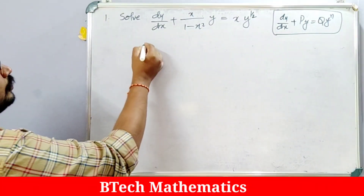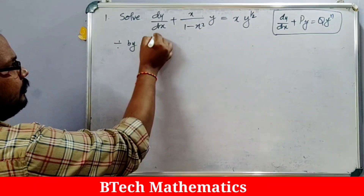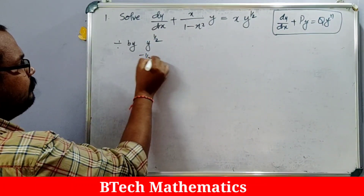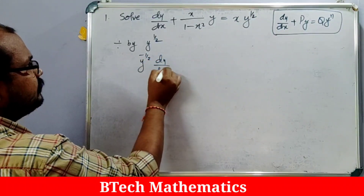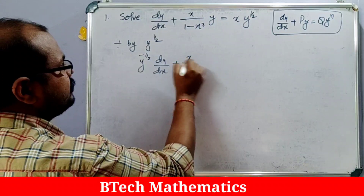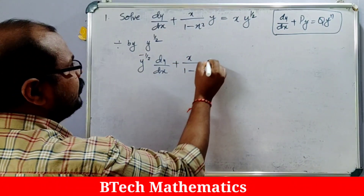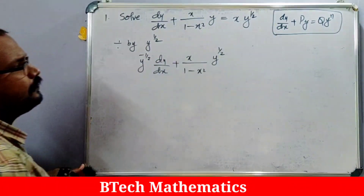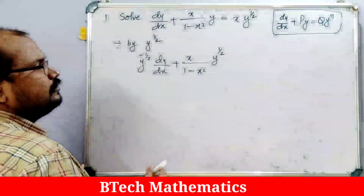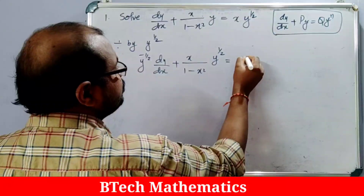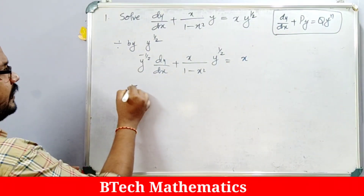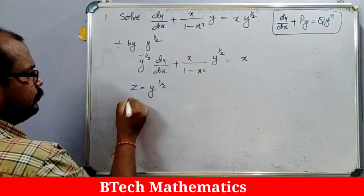Dividing by y^(1/2) gives: y^(-1/2)·(dy/dx) + x/(1-x²)·y^(1/2) = x. Because y divided by y^(1/2) gives y^(1/2) in the numerator. Now we make the substitution z = y^(1/2).